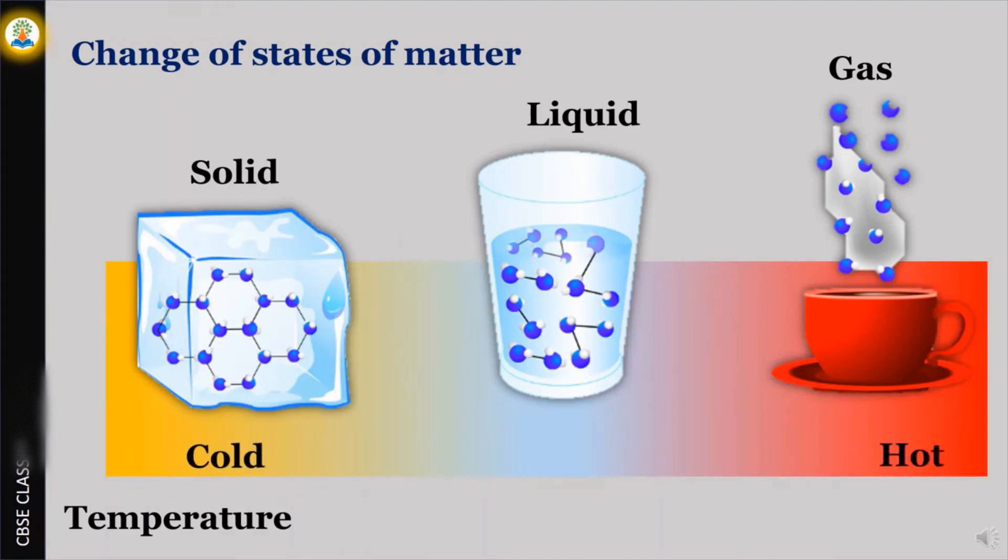Adding heat changes state. If we heat ice, it becomes warm water, and if we continue further heating, it becomes vapor.